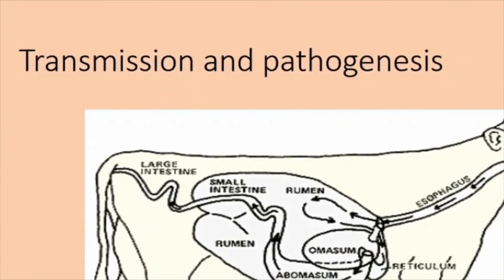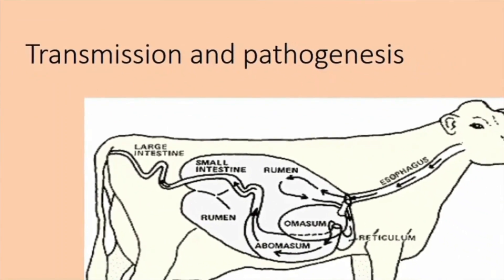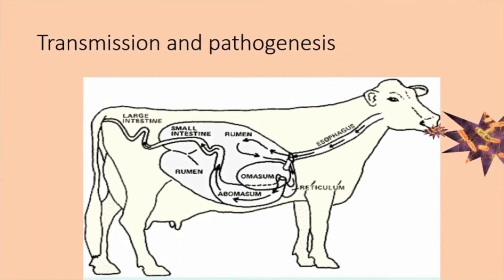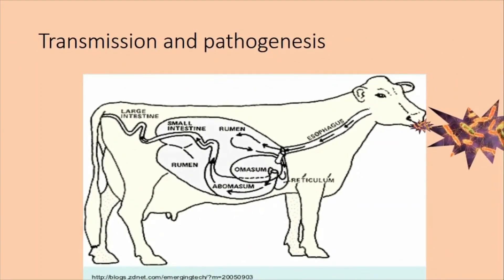If we learn the pathogenesis of Salmonella, then it is very easy for us to learn about the clinical signs and its lesions. So let us study how this organism transmits and how the pathogenesis is. Mainly the disease transmits through the oral route or fecal-oral route. From the stomach, it reaches through the abomasum and stomach into the intestine, where it mainly affects the ileum.